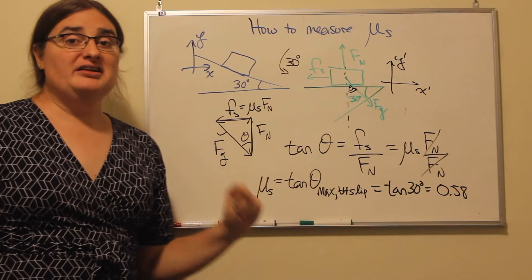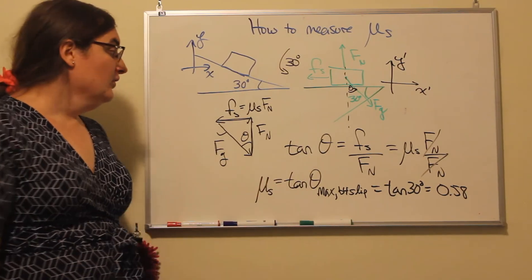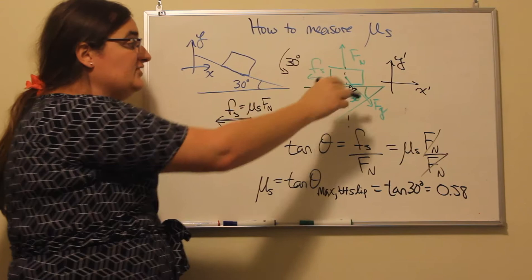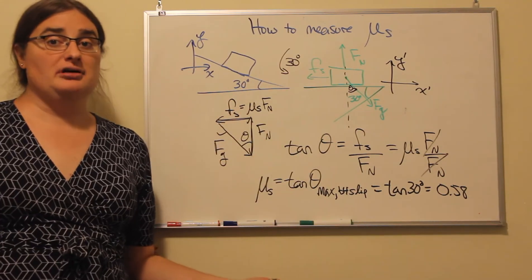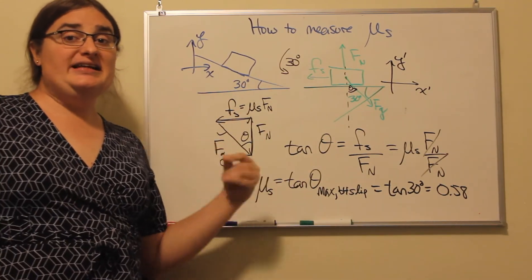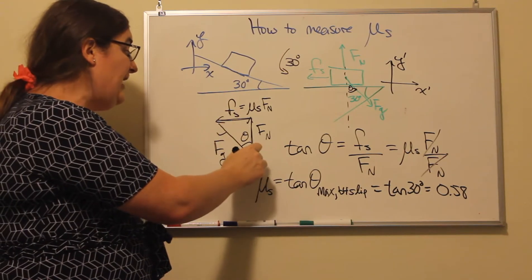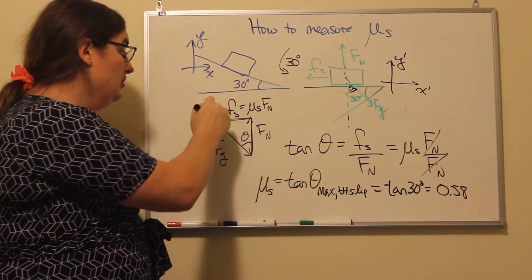How can we find the coefficient of static friction? Well, if we're in equilibrium, all three of these vectors should sum to zero. So the easiest thing I can think of to do is add my normal force plus my force of static friction plus my force of gravity.